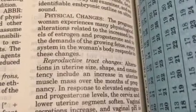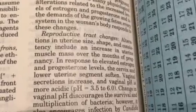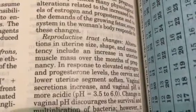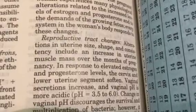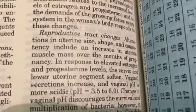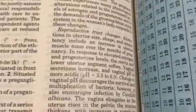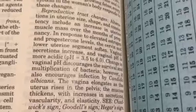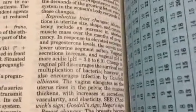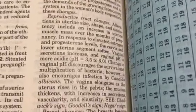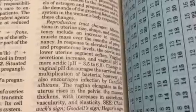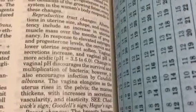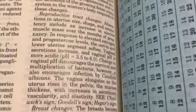Every system in the woman's body responds to these changes. Reproductive tract changes: Alterations in uterine size, shape, and consistency include an increase in uterine muscle mass over the months of pregnancy. In response to elevated estrogen and progesterone levels, the cervix and lower uterine segment soften, vaginal secretions increase, and vaginal pH is more acidic, pH equals 3.5 to 6.0.